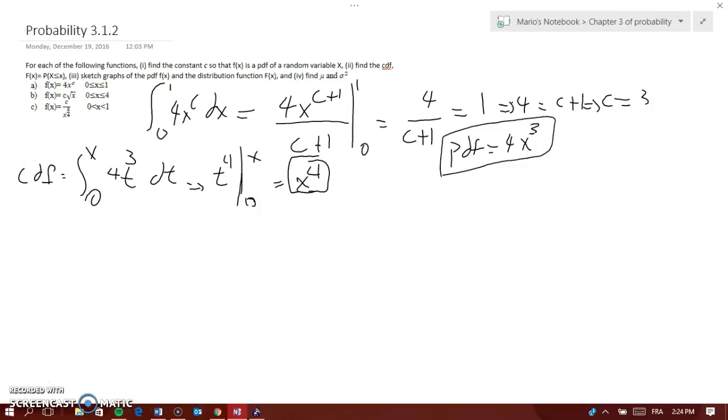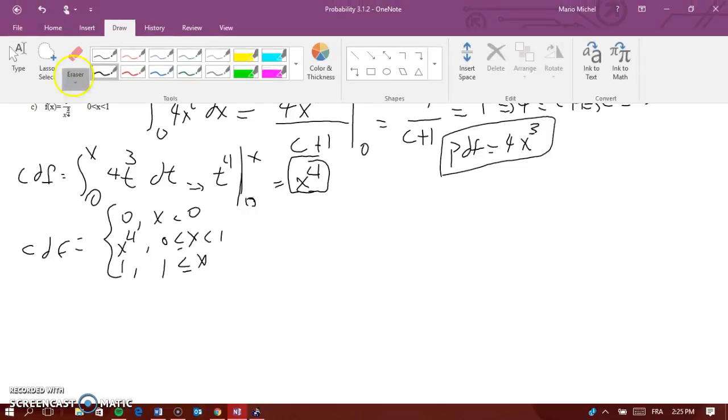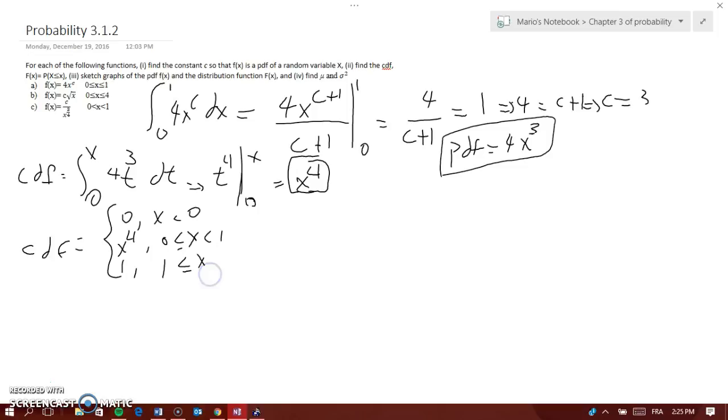The CDF would be written as: we know that it would be 0 if x is less than 0. It would be x to power of 4 if 0 is less than or equal to x, less than 1. And it would be 1 if 1 is less than or equal to x. I did a video like this where I showed you why it's like that. Please go back to it so you can remember some of these things.